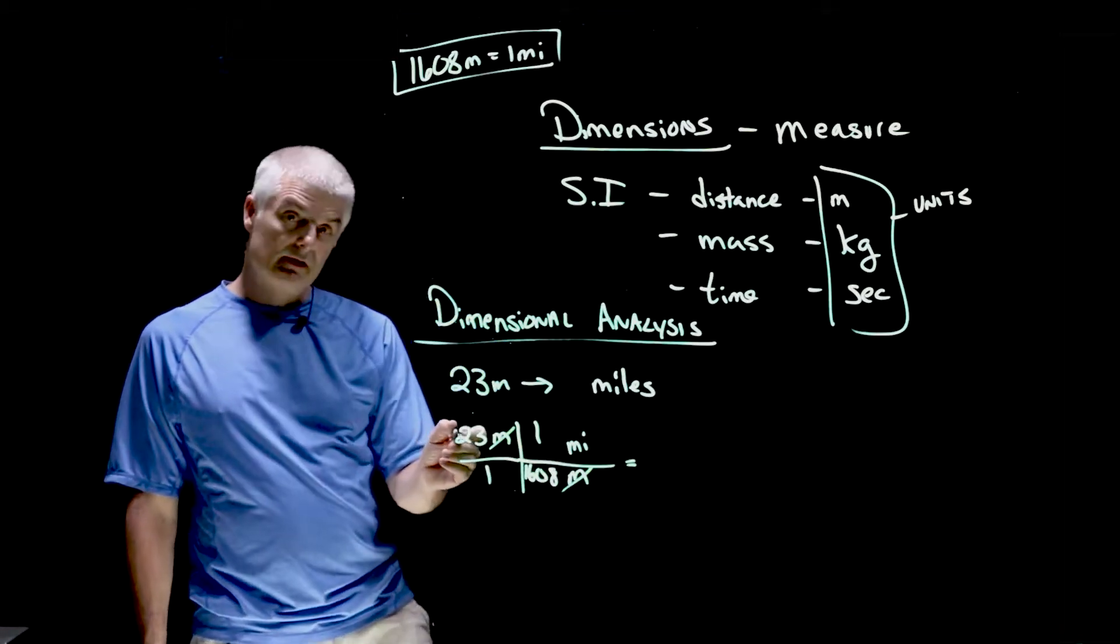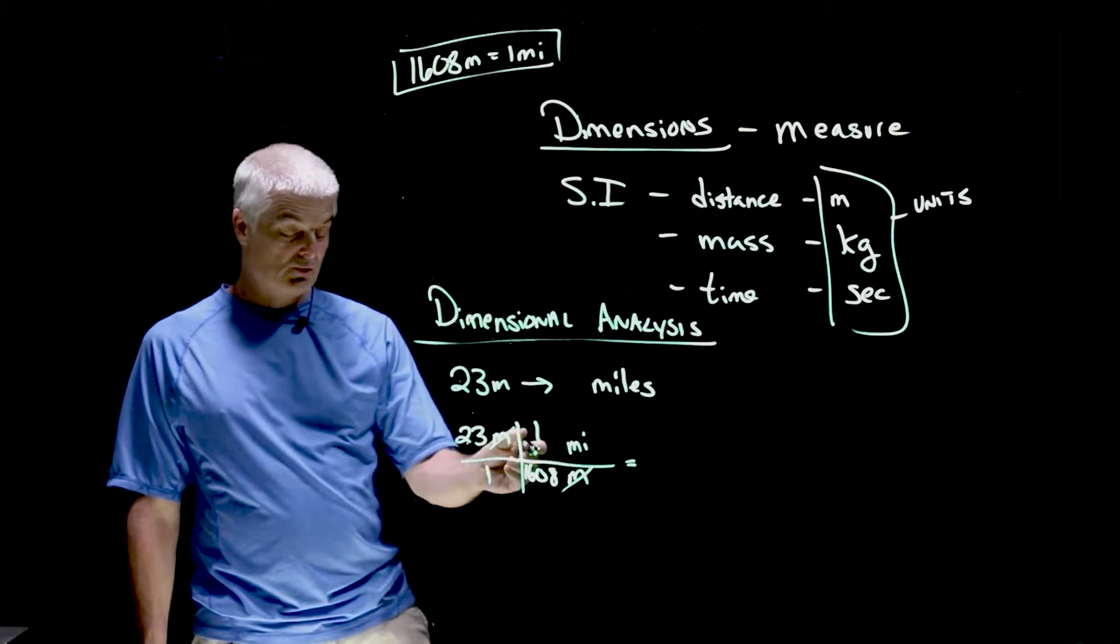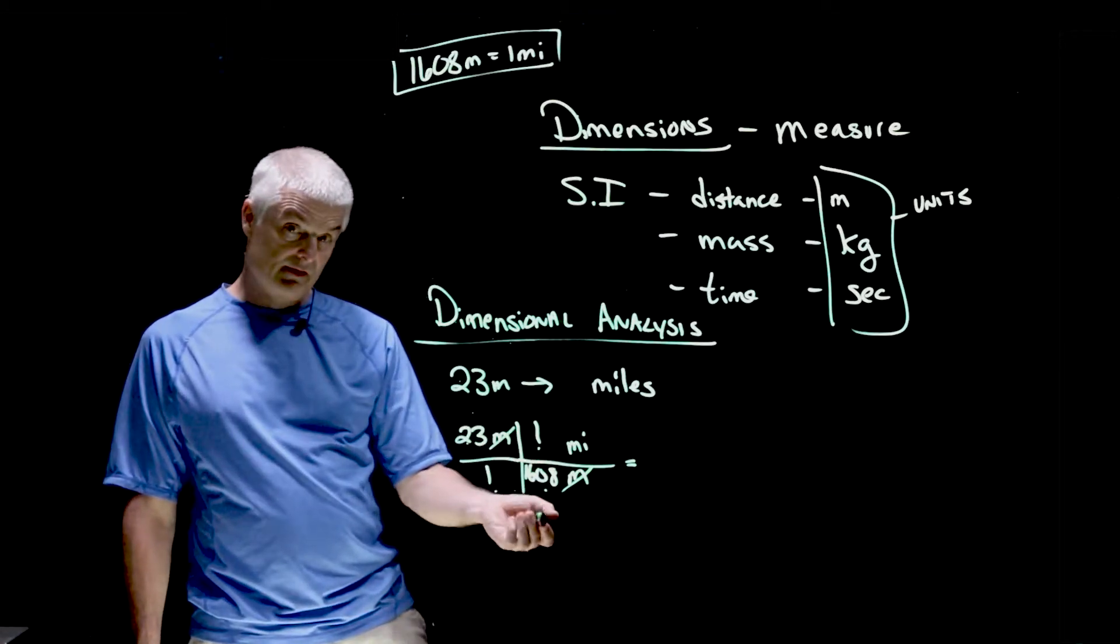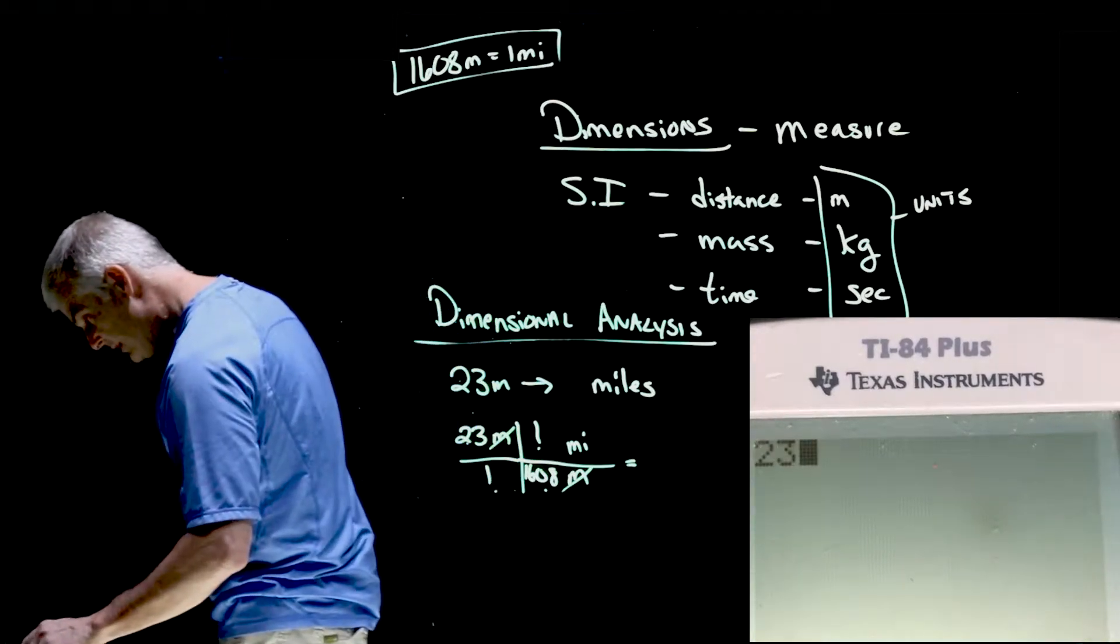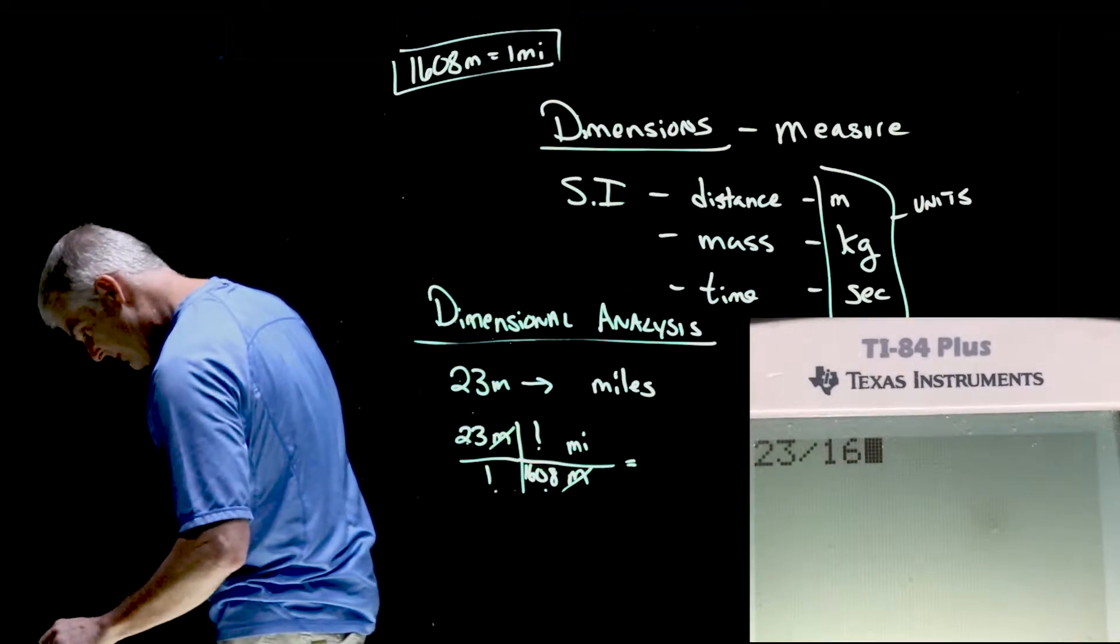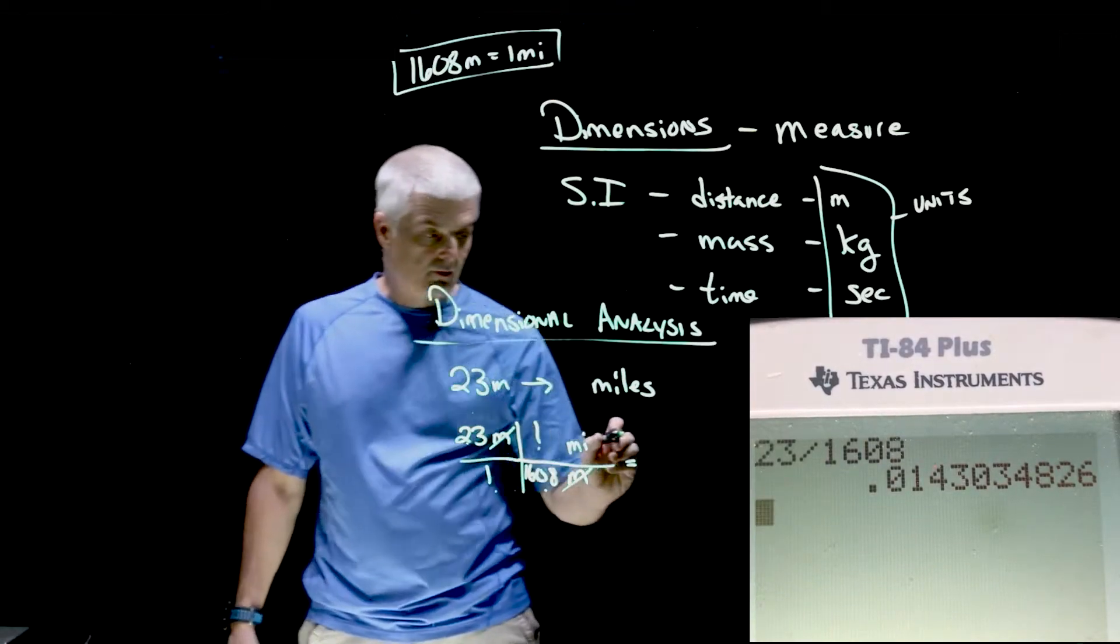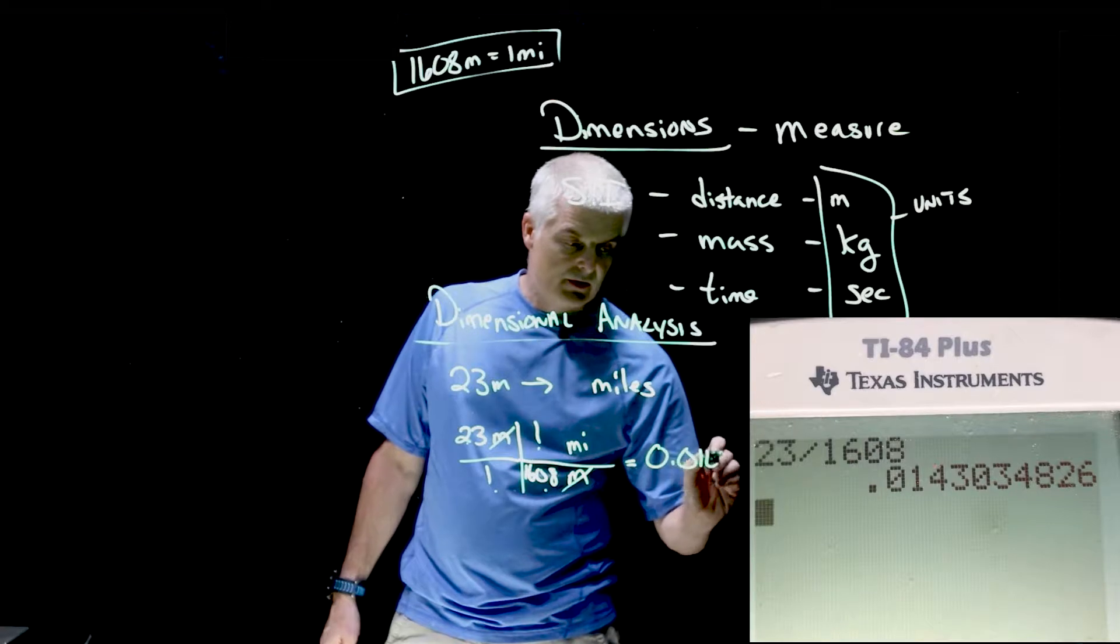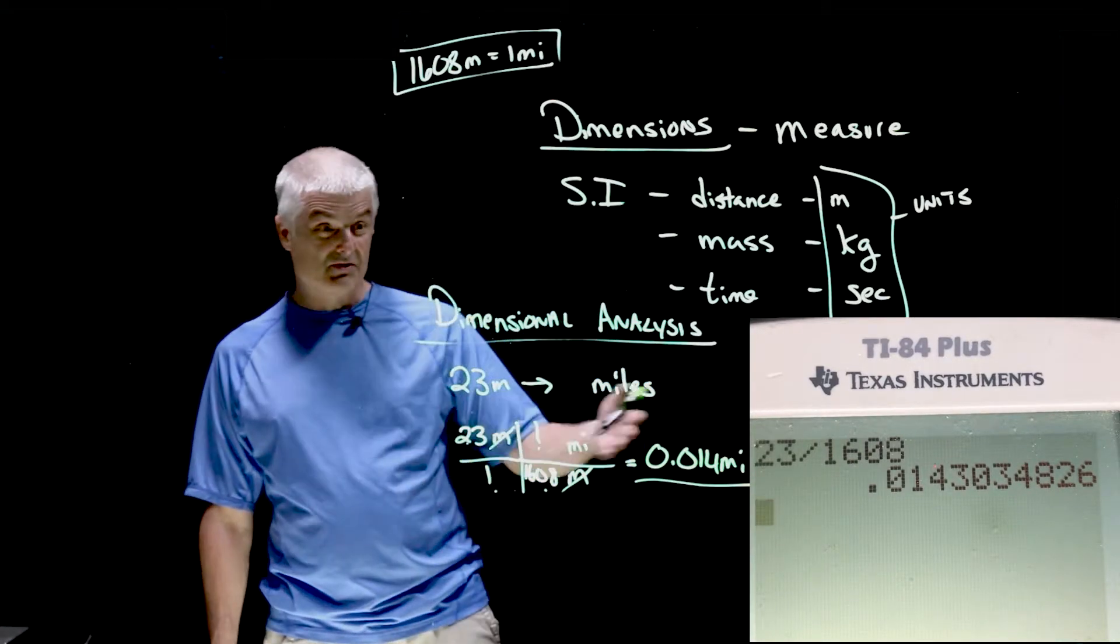And so what I do is everything on top, you multiply. Everything on the bottom, you divide. So 23 times 1 divided by 1 divided by 1608. So let's see if we can do that in our calculator. I'll just say 23 divided by 1608, and I get 0.014 miles. Makes sense to be short, because 23 meters is not very far.